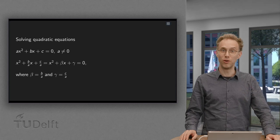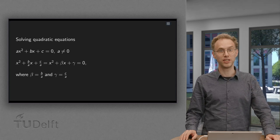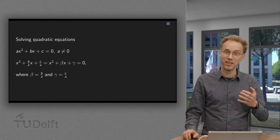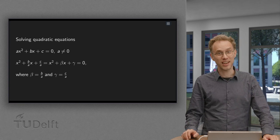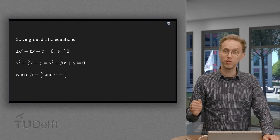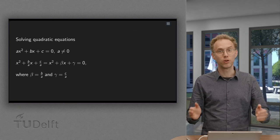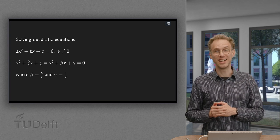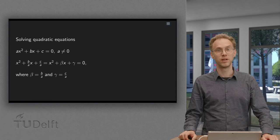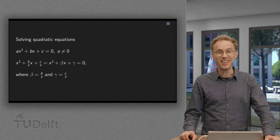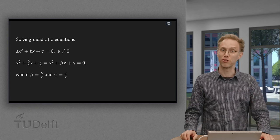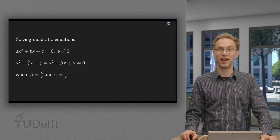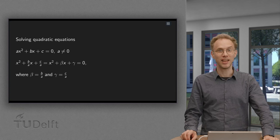In high school you have learned to solve quadratic equations for non-negative discriminants. We will now extend this to negative discriminants using a procedure called completing the square. You may encounter this procedure later again in other problems. But why do we need completing the square for solving quadratic equations? We have our ABC formula, right? Let us see in this video.